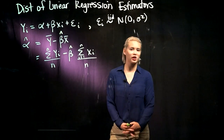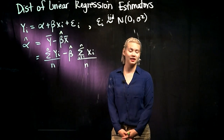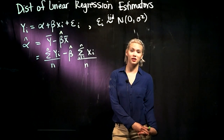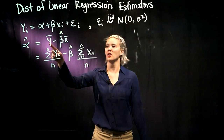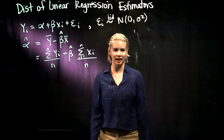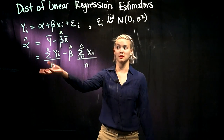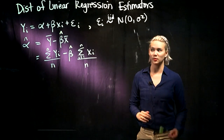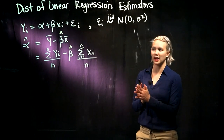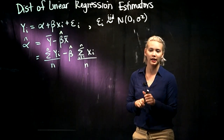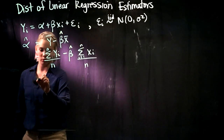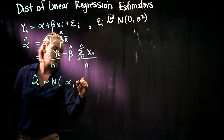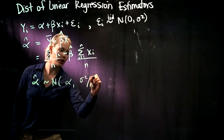We've been working with simple linear regression, and if you went through the book's calculations, you figured out that the intercept estimator is y_bar minus beta_hat times x_bar, where y_bar is the mean of all the y_i's and x_bar is the mean of all the x_i's. What we want to talk about now is the distribution of alpha_hat. It will turn out that alpha_hat has a normal distribution with mean alpha and variance sigma squared over n.